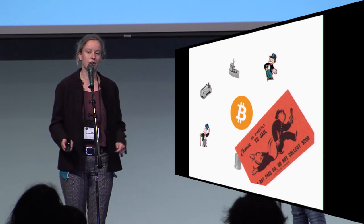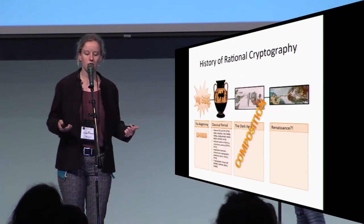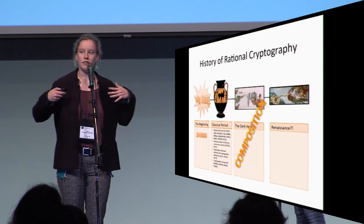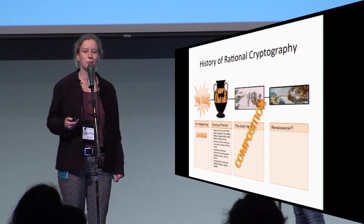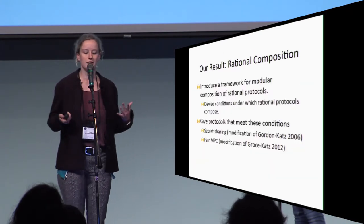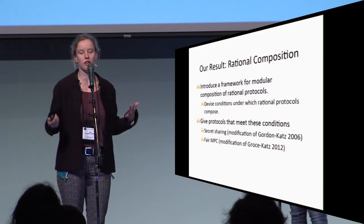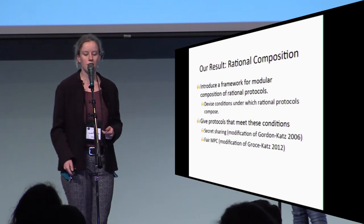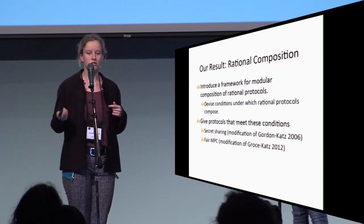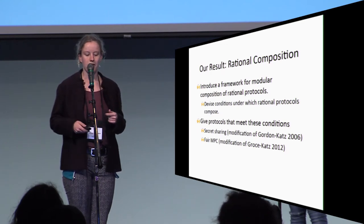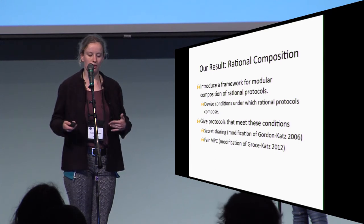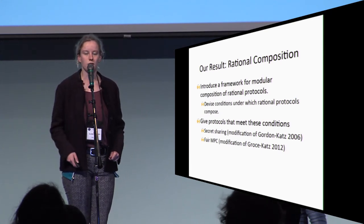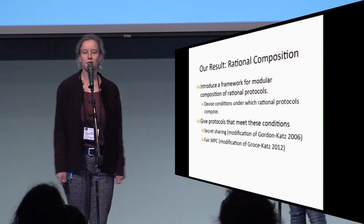Terrible things might happen and the whole thing could break down. So what we do in our work is introduce a composition framework, which we hope can usher in a renaissance of rational cryptography. Our result is that we introduce a framework and devise conditions under which rational protocols compose, and then give some protocols that meet those conditions — namely, the secret sharing protocol from Gordon and Katz and the fair MPC protocol of Gross and Katz, which we modify and develop in this framework. Our results should be on ePrint in a few weeks. Please come talk to us for any questions. Thank you.